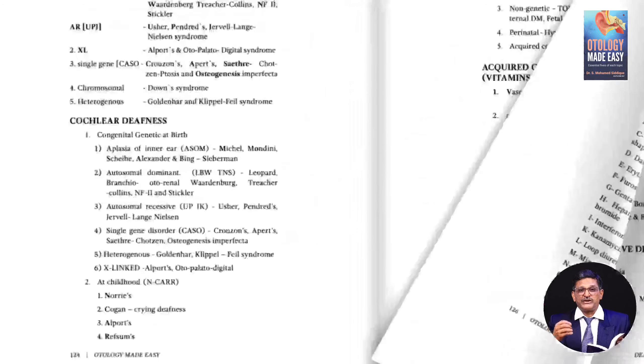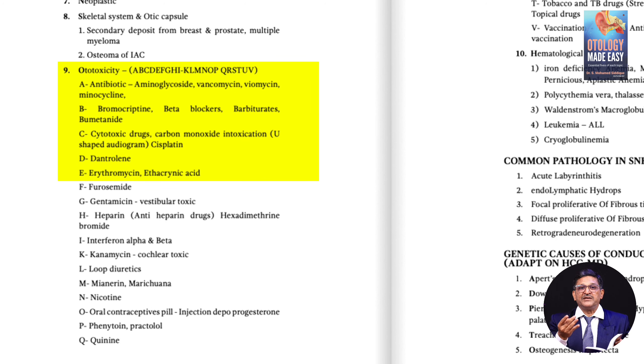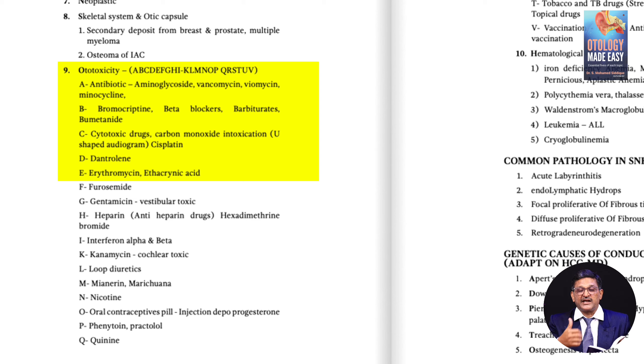If we take ototoxicity drugs, my mnemonic is ABCDE: A means aminoglycosides, B means bleomycin, C means cisplatin, D means diuretics, E means ethacrynic acid — like that.